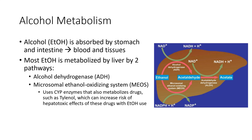Alcohol is readily absorbed from the GI tract — it's actually one of the few substances that can be absorbed from the stomach. When you think about alcohol, it fits somewhere between a food and a drug. It supplies calories, but can't be broken down or stored as protein, fat, or carbohydrates. As a food, the metabolism of alcohol yields 7.1 kilocalories per gram. About 80 to 90% of the alcohol a person drinks is metabolized by the liver; the rest is excreted through the lungs, kidneys, and skin.